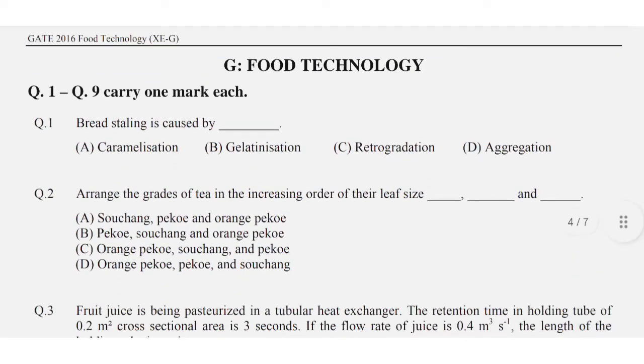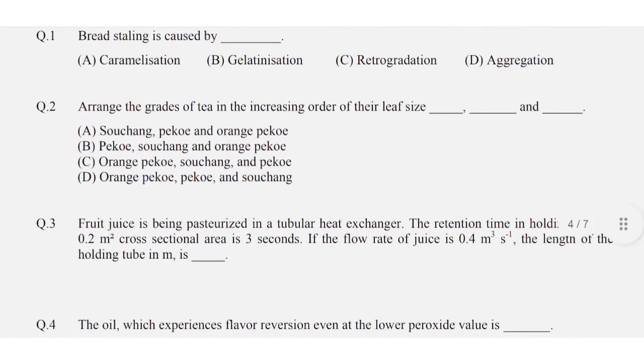Question number one: bread staling is caused by — the correct option is C: retrogradation.